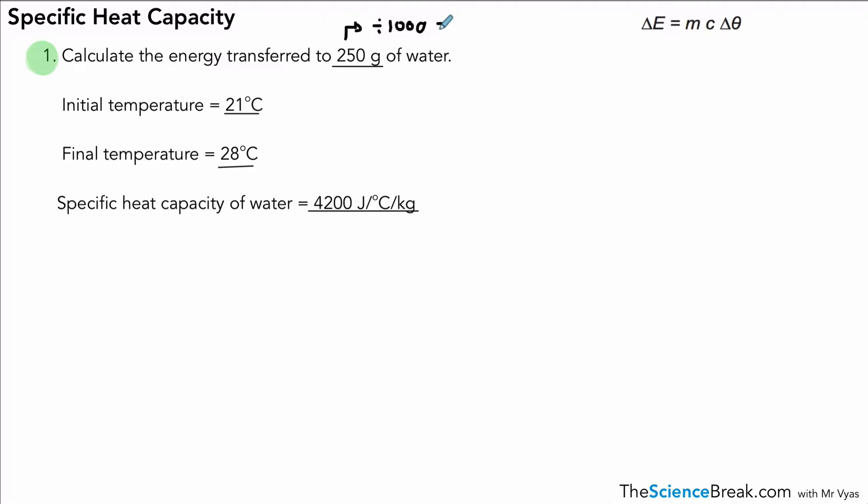First thing is that the mass of the water is given to us in grams, so we need to convert to kilograms by dividing by a thousand. So here's our kilograms now: 0.25. The temperature change is 28 minus 21 because that's the temperature rise, and that would be seven degrees centigrade. And the specific heat capacity is given there.